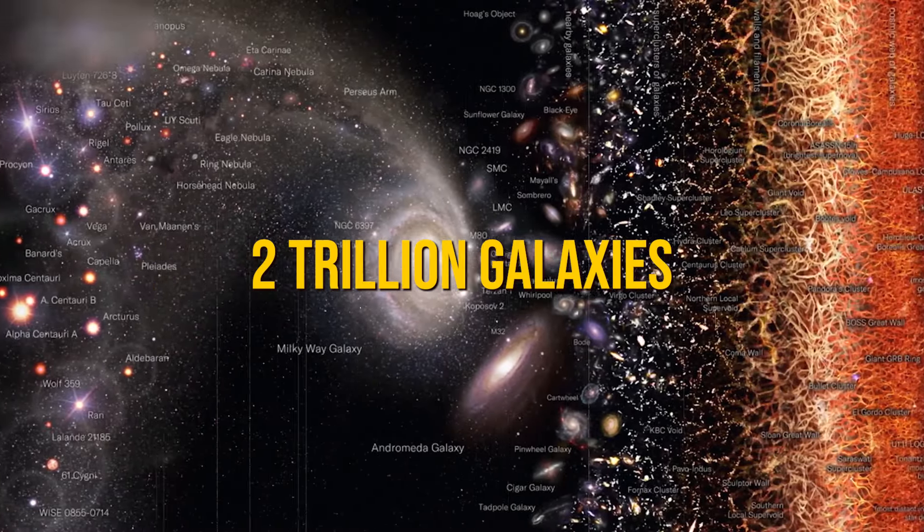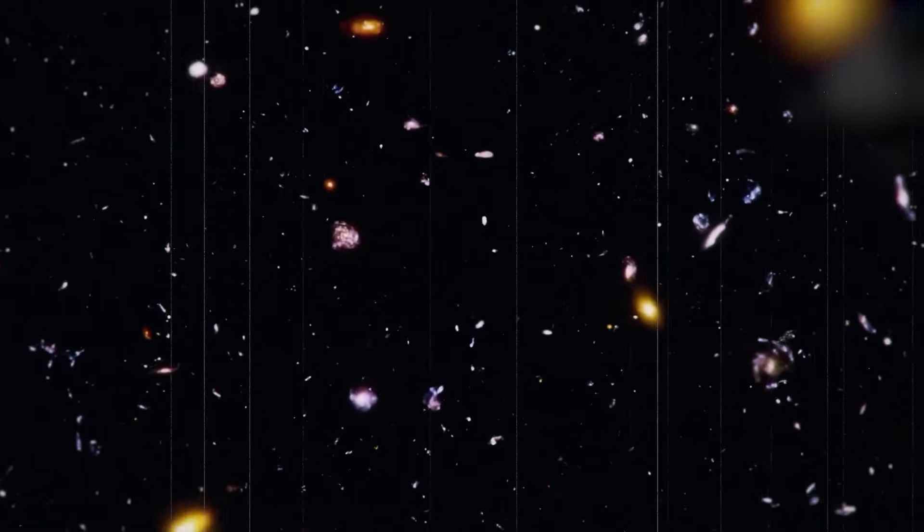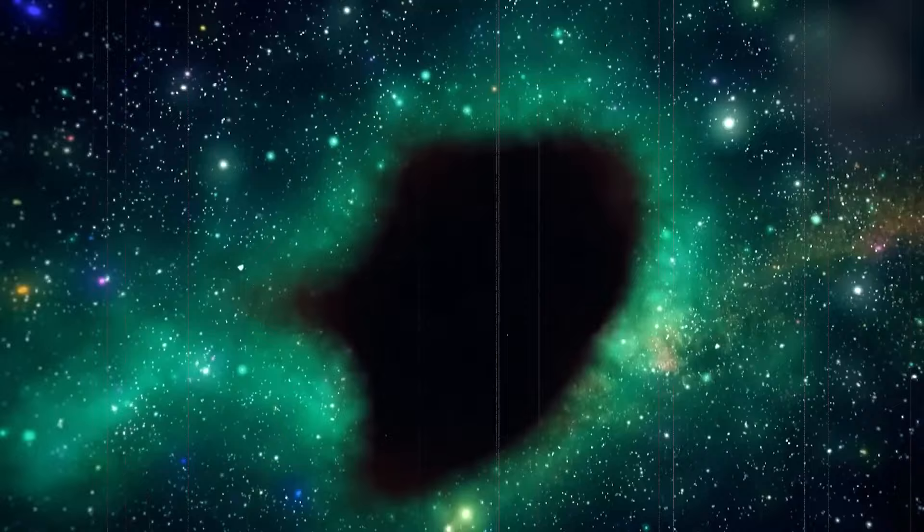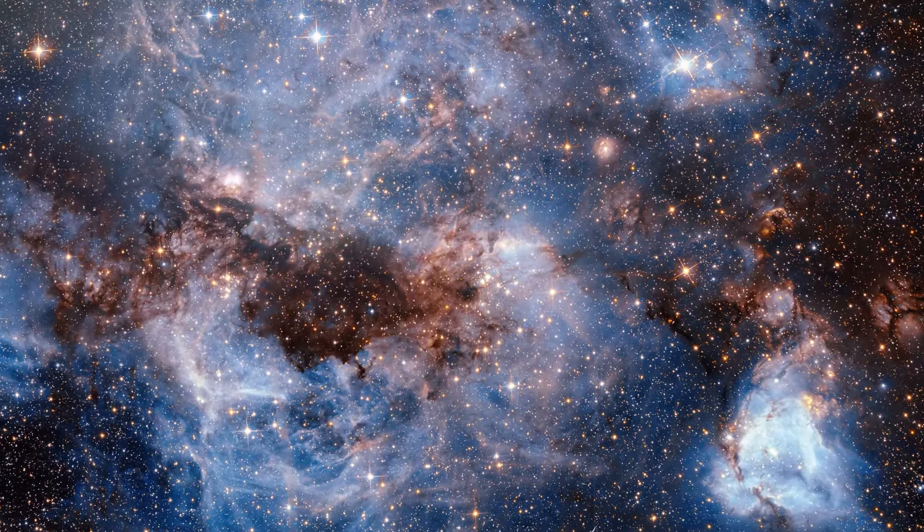Picture this: over 2 trillion galaxies. Each galaxy has hundreds of billions of stars, plus tons of planets, asteroids and comets. It's like a bustling cosmic neighborhood full of diversity and surprises.